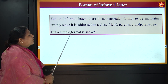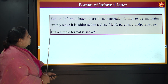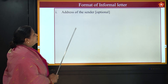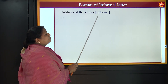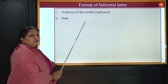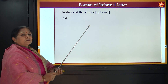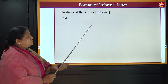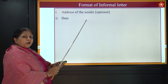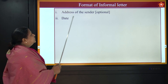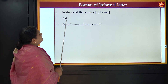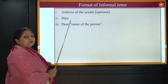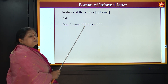But a simple format is shown. Let us see the format. Address of the sender is optional because it is your mother or your dearest friend, grandparent — they will be somewhere in and around or nearby your house. So the address of the sender is not required. Then date — date is required because they will know at which date you are writing. Dear, name of the person.